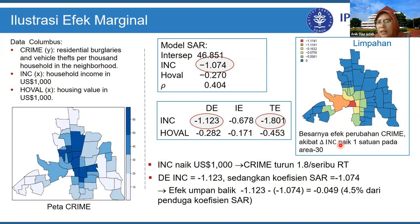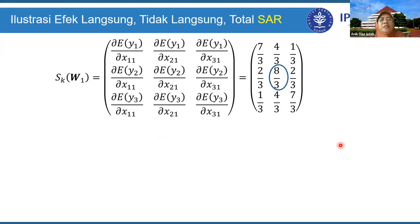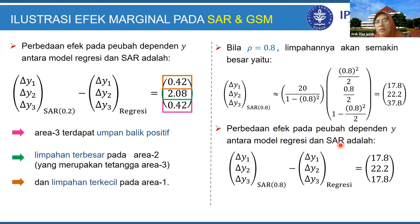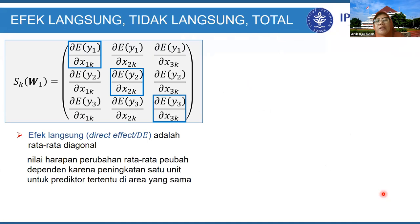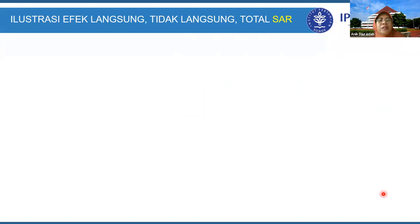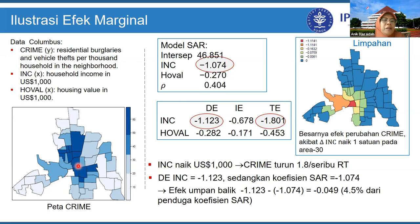Untuk menghitung limpahan per lokasi, kalian harus menghitung delta Y-nya: perubahan di lokasi 30 dikalikan matriksnya, dan nilainya digambarkan dalam peta. Jadi kalau menggambarkan kasus seperti ini, bisa mulai dari hotspot-nya. Hotspotnya di lokasi tertentu — bagaimana kalau ada perubahan di lokasi itu, dampaknya menyebar kemana-mana.